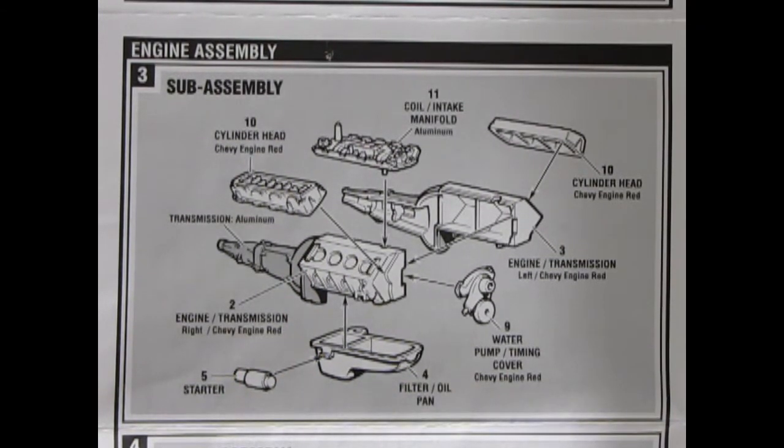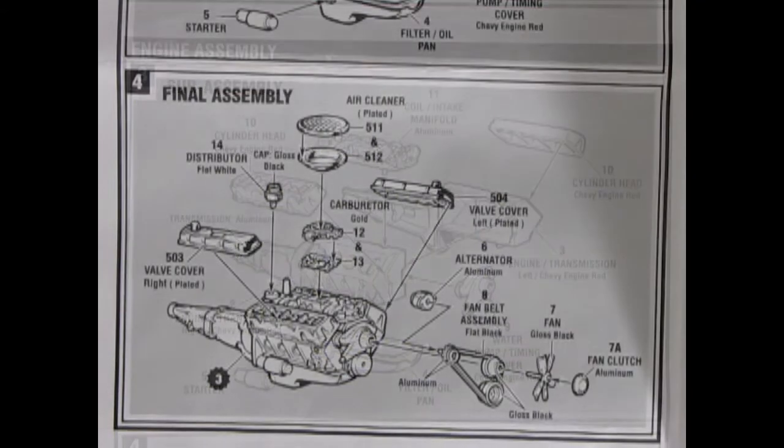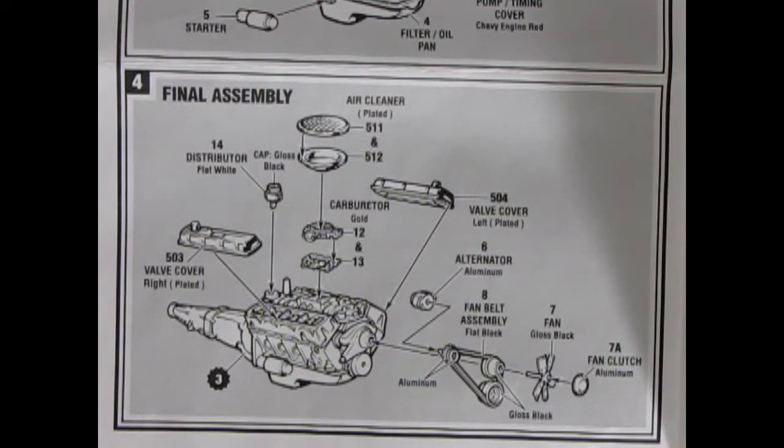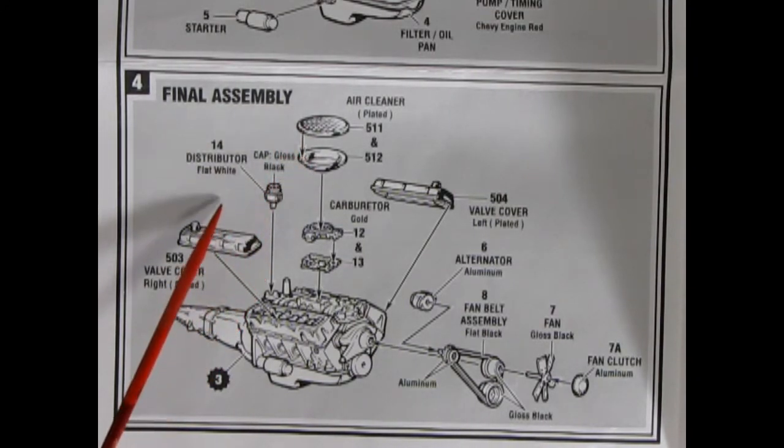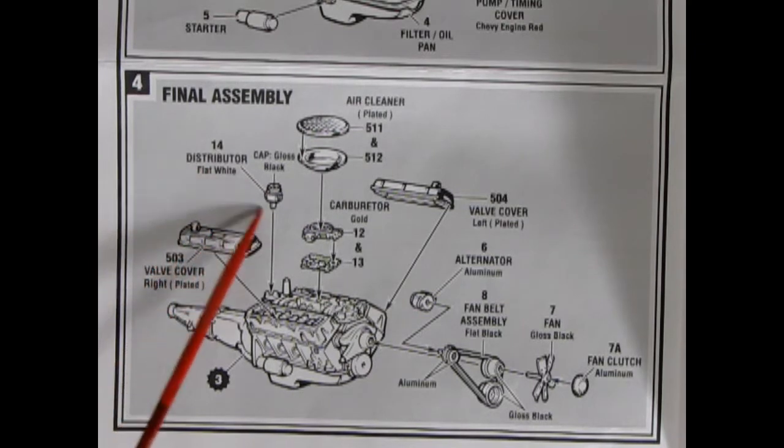Now we get to see the final assembly next. Here's our final assembly for this big engine. Here we get the special Baldwin Motion style air cleaner. And the bottom for the air cleaner. Our distributor going in here, flat white, and the cap is gloss black.